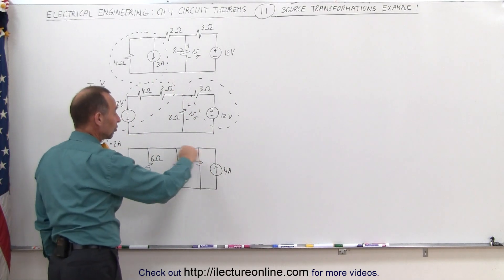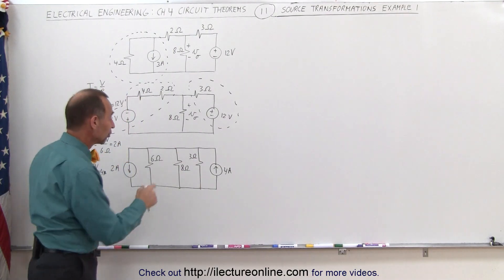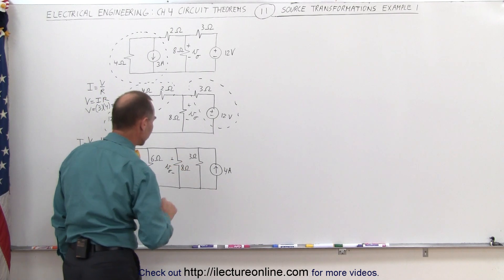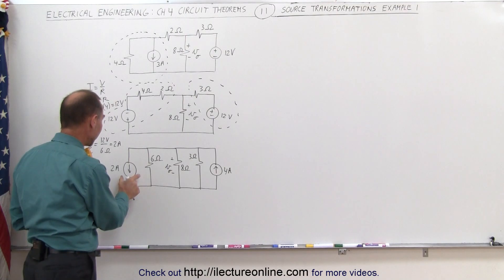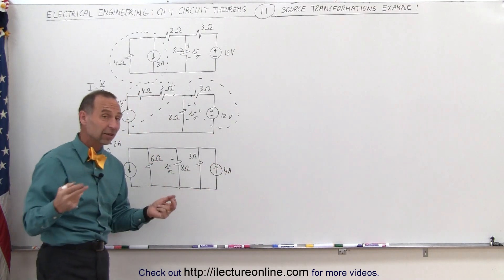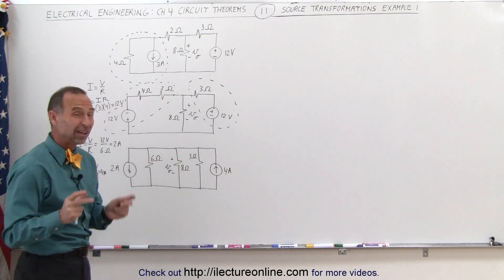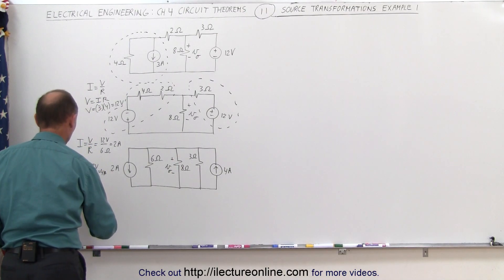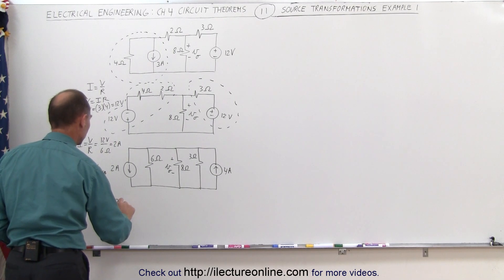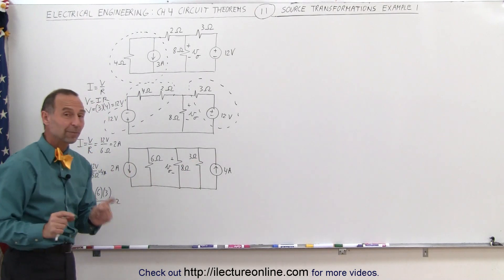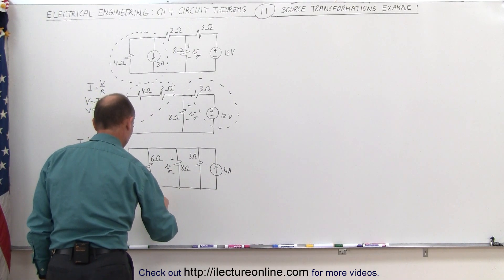One thing that has changed is there are no longer any resistors near the top. Notice that the 6 ohm and the 3 ohm resistor are in parallel, and we're still trying to find the voltage across the 8 ohm resistor. I can combine the 6 and the 3 ohm resistors into a single resistor and move this current source over to the other side — since everything is parallel, it doesn't matter. Since they're in parallel, the total resistance equals the product over the sum: 6 times 3 over 6 plus 3, which is 18 divided by 9, or 2 ohms. I can replace the 6 and 3 ohm resistors with a single 2 ohm resistor.